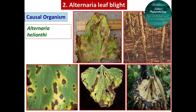Seed treatment should be done at a rate of 2 grams per kg for management of Alternaria. If disease emergence occurs after planting, it can also be controlled by spraying with fungicides like carbendazim, tebuconazole, or trifloxystrobin at a rate of 2 grams per liter. This is all about the management of Alternaria blight.